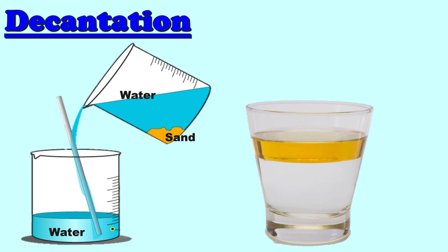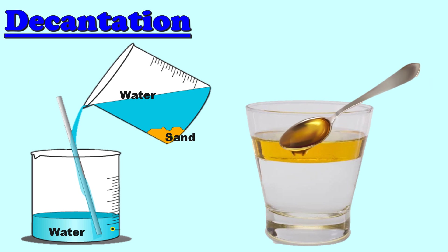Another example that can be separated through decantation is a mixture of oil and water. Because they have different density, oil can be separated by scooping using a spoon.